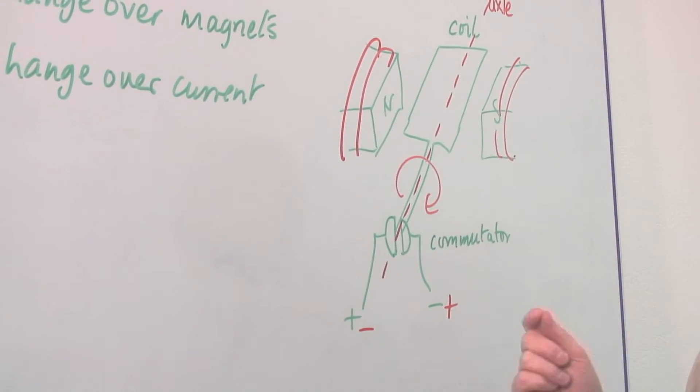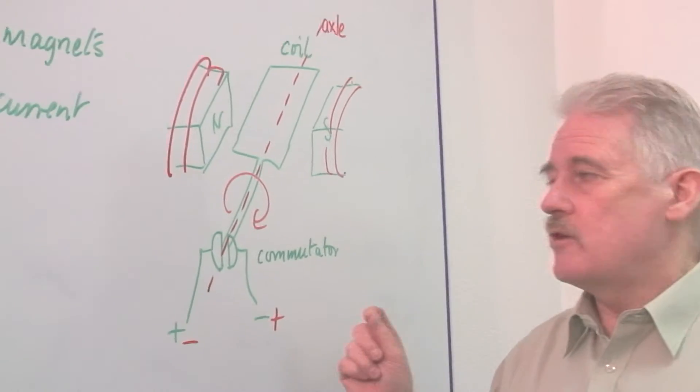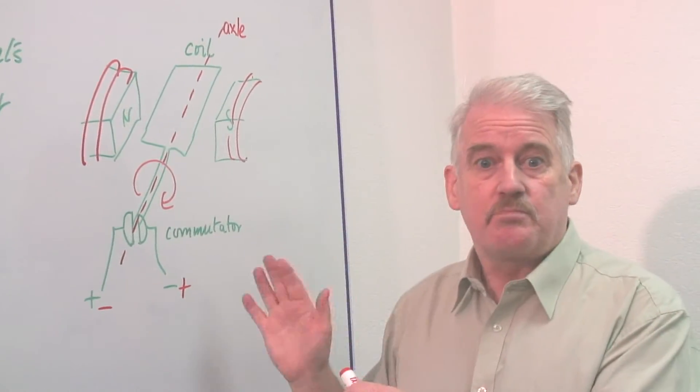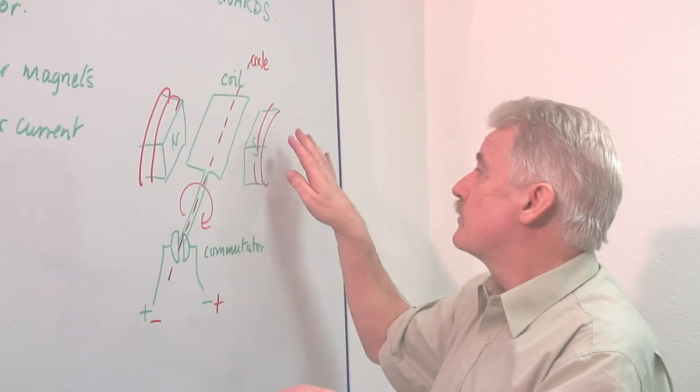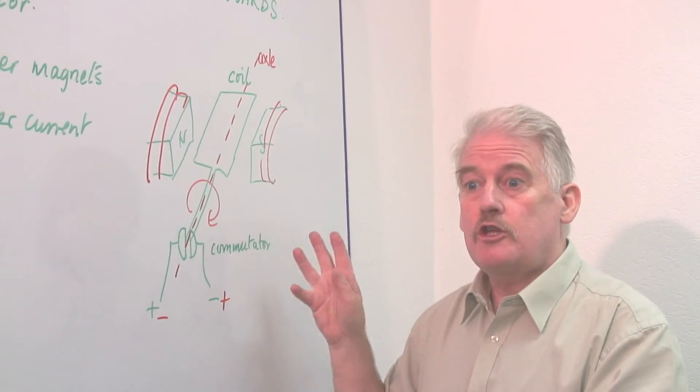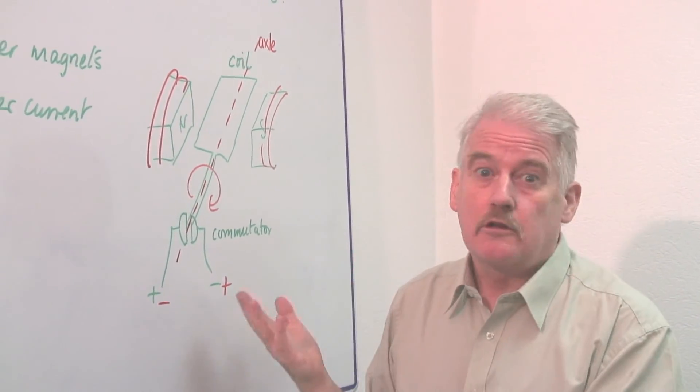That is why the AC motor, the alternating current motor, basically has problems because if you use the same current to drive the coil as for the field magnets, then you change one, you change both, so you still go the same way.